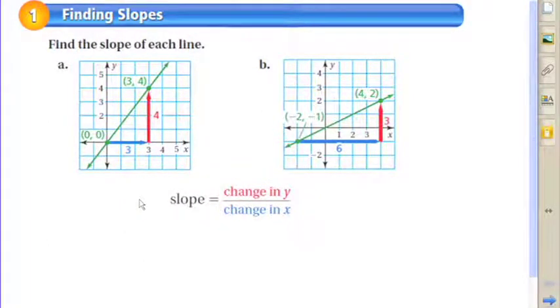Slope is a formula: it's the change in the y value over the change in the x value. This is based off of any two points on a line.